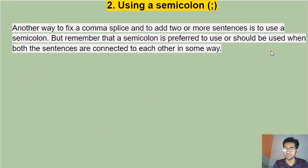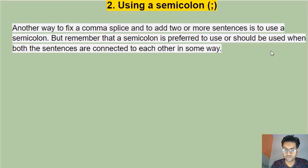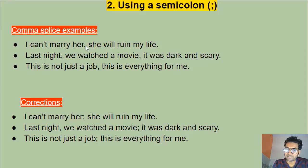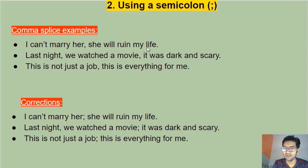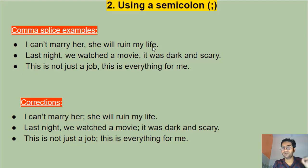The second way is using a semicolon. A semicolon can join two or more sentences together, but only when those sentences have some sort of relation between them — they are connected to each other. For example, 'I cannot marry her; she will ruin my life' works because both sentences are closely related, talking about the same person and situation.